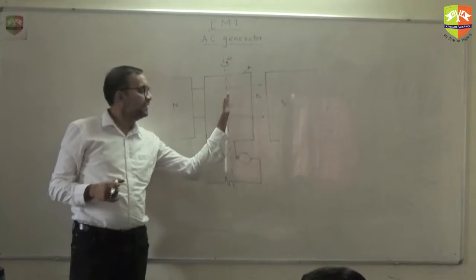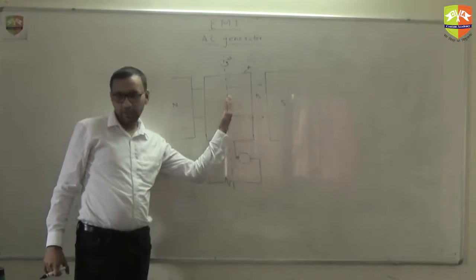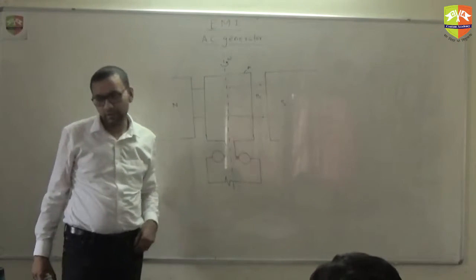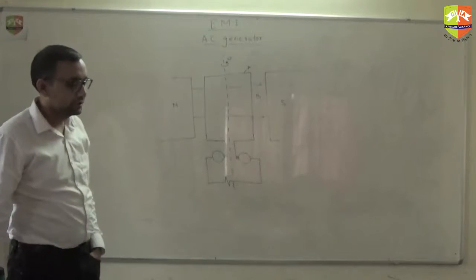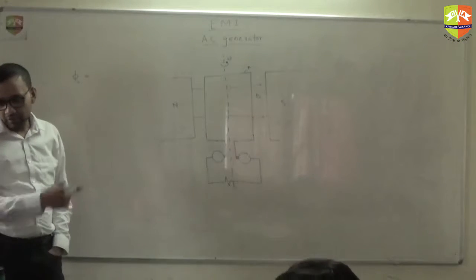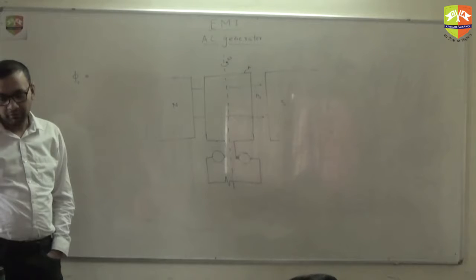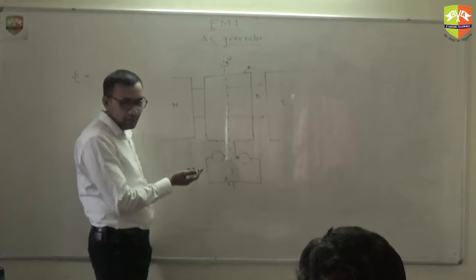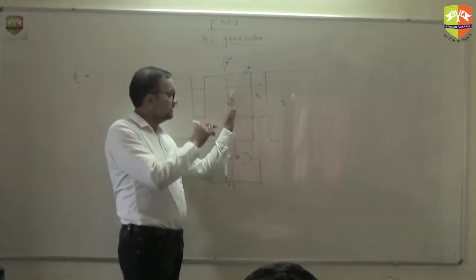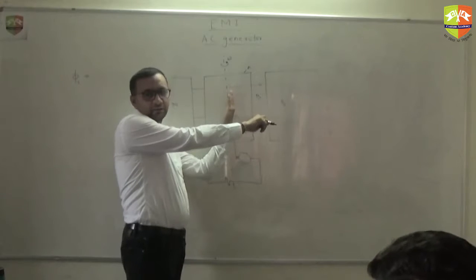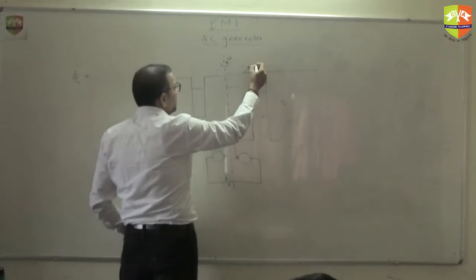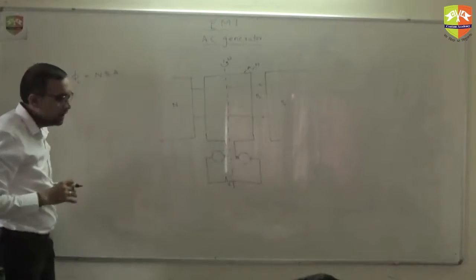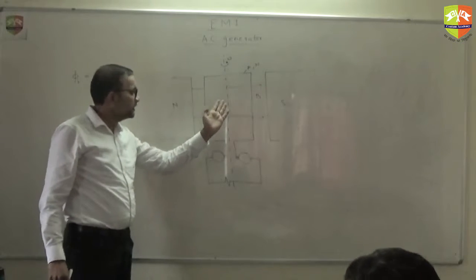The coil is initially oriented such that we need to find the flux through it. The flux is B times A — the magnetic field is crossing this area, so it is B into A. If the coil has number of turns N, the total flux will be N times B times A.